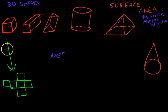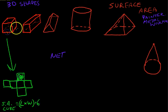Now finding the surface area of a cube is very simple. You just find the area of one of these shapes and multiply it by six. So the surface area of a cube is equal to length times width times six. So it's one of these, length times width times six. That's a cube.